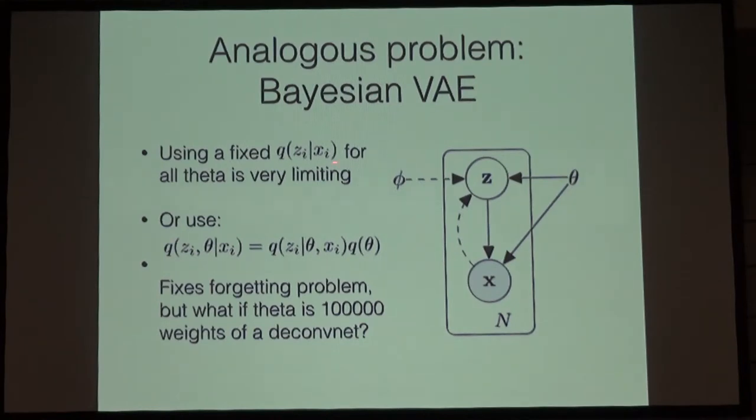I claim that we can't just continue using a fixed Q Zi given Xi for any possible theta, because theta determines what the meaning of Z is. So it wouldn't really make sense. The obvious thing we can do is say we'll have a Q of theta, and then we'll have another Q of Zi given theta Xi. This is a nice way to factorize this joint posterior. And now the problem is, again, we have to take in theta to a neural network. This just is not going to scale when this generator is some giant deconvolutional neural network.